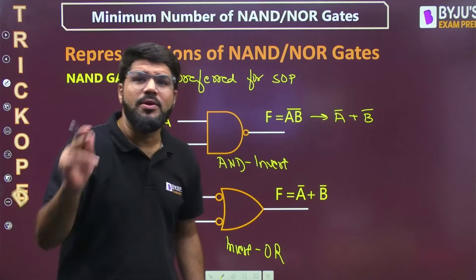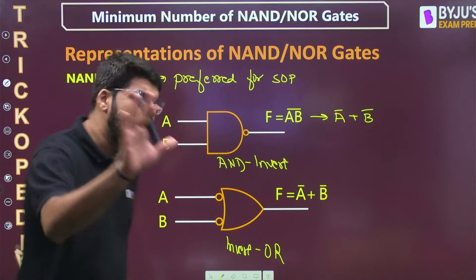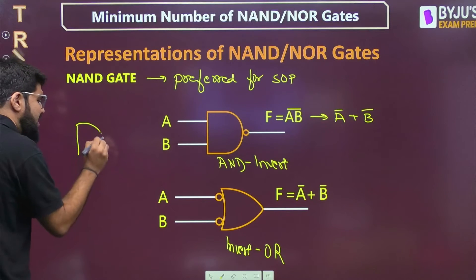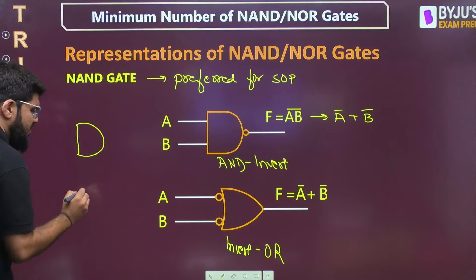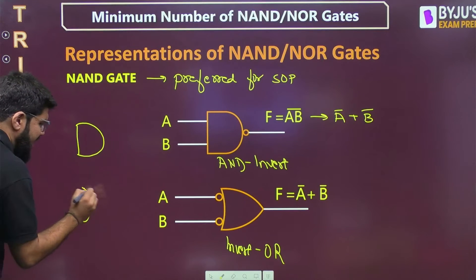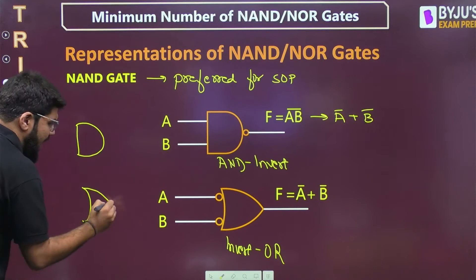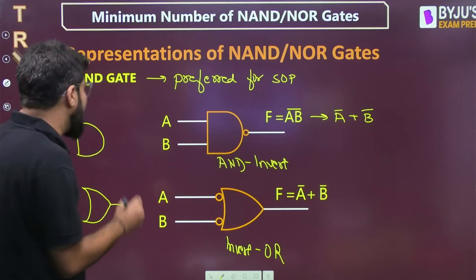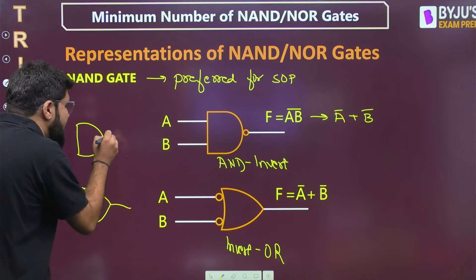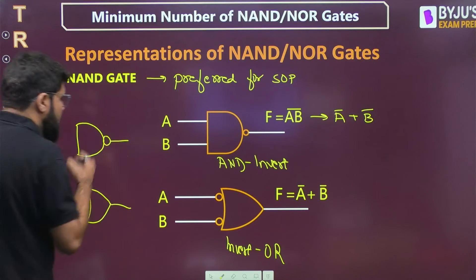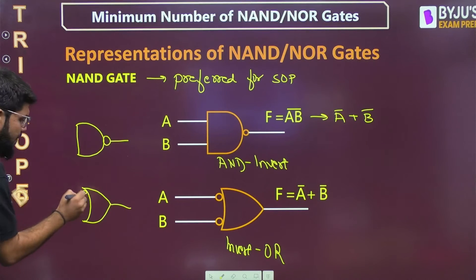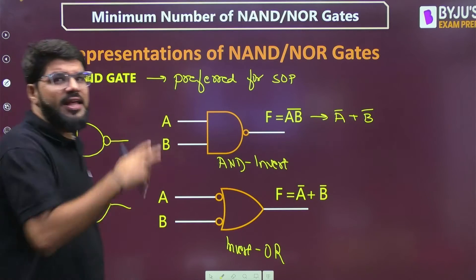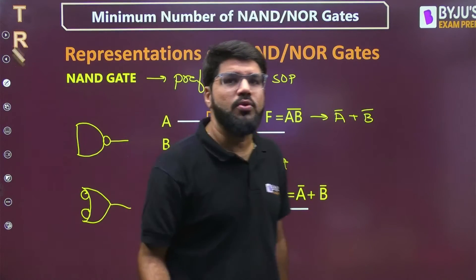So in any given circuit, if you have AND gates and OR gates and you want to convert to NAND gates: place the bubble at the AND gate output, and place the bubbles at the OR gate inputs. Both are now converted to a single NAND gate.